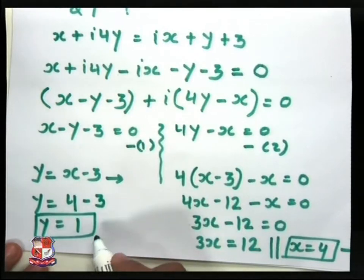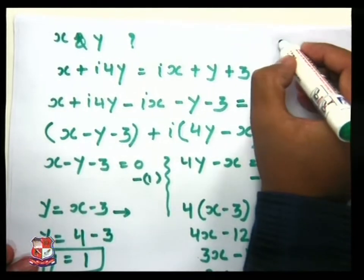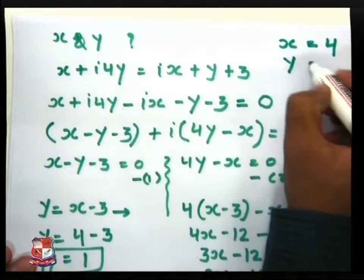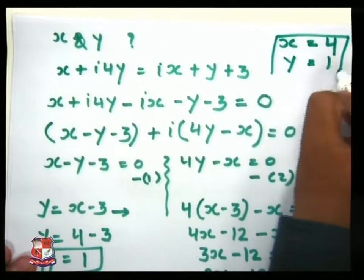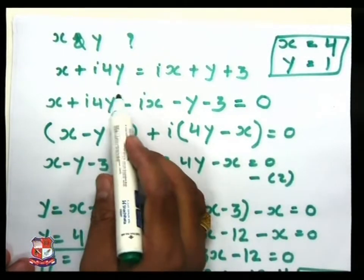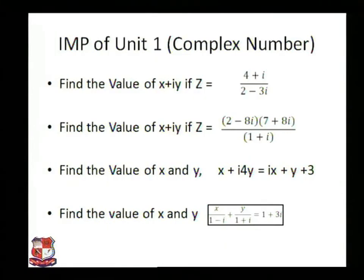Using this way, we can find both values: x is equal to 4 and y is equal to 1. This is our result or answer using the equation x plus i4y equals ix plus y plus 3. Now we want to move to our next question: find the value of x and y if x divided by 1 minus i plus y divided by 1 plus i is equal to 1.